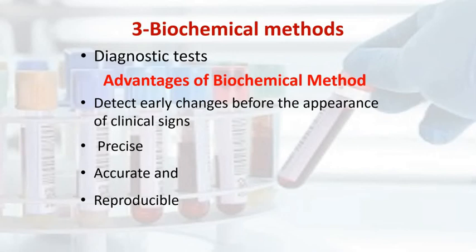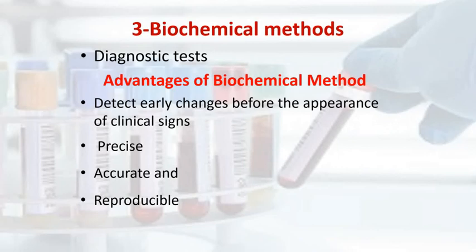The third method is the biochemical method, in which we perform diagnostic tests in laboratories. A key advantage is that we can detect early changes before the appearance of clinical signs — which addresses the main limitation of the clinical method. It is precise, accurate, and reproducible. Tests include serum protein, serum calcium, vitamin B, and hemoglobin, as well as biophysical assessments including radiological examination for long bones.